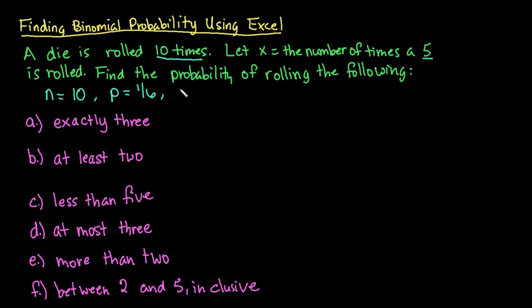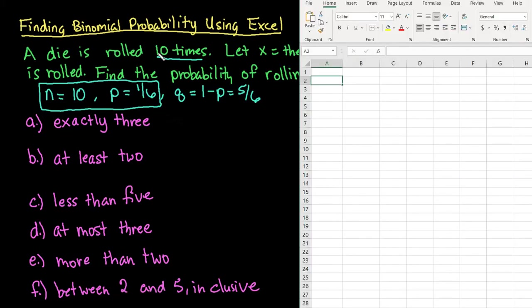If you were using the binomial probability formula, you do need to know the probability of failure. And just remember that that is always 1 minus p, so that would give us 5 out of 6. You don't need that for the formula in Excel. You only need to know your number of trials and your probability of success.